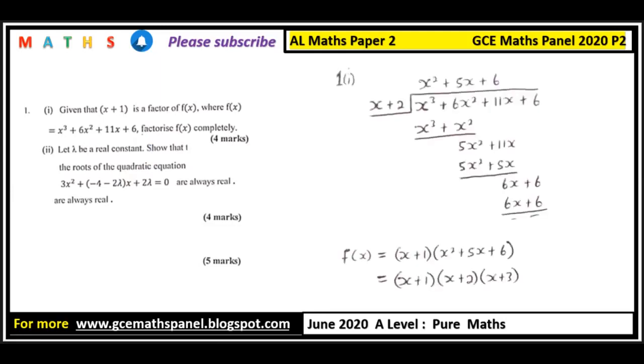So here we divide all through by x plus two, which is the factor. And when we do this division, we have the remainder to be equal to zero, corresponding with what the equation says that x plus one is a factor. And the quotient is x² + 5x + 6. So f(x) can therefore be expressed as (x + 1)(x² + 5x + 6). And when we further factorize x² + 5x + 6, we have (x + 2)(x + 3).